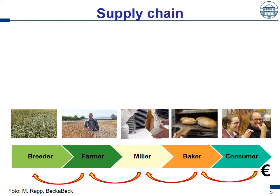Let's have a look at the supply chain. From left to right, we start with breeders who develop new varieties. Then the farmer takes the new variety, grows it, brings it to the miller who makes the flour. The baker makes the bread and the consumer at the end is happy with new products — and he or she is the one who brings the money into the system. The consumer pays for the product and this money is given back to all players of the product chain.